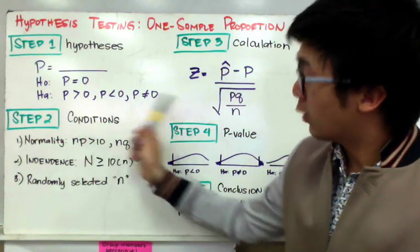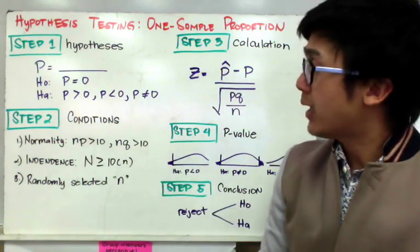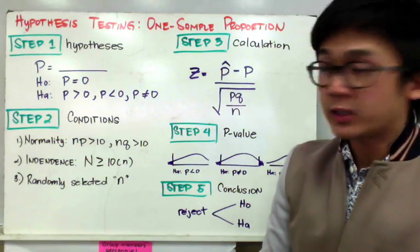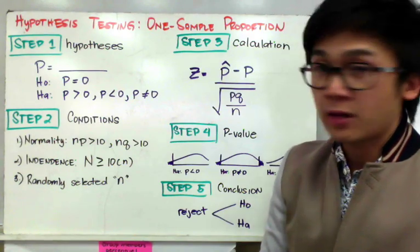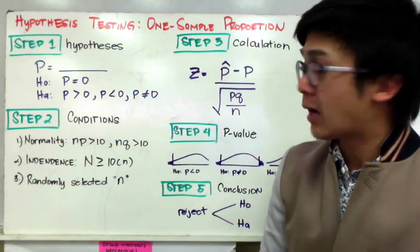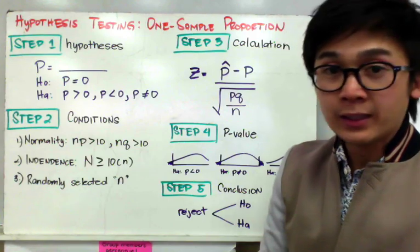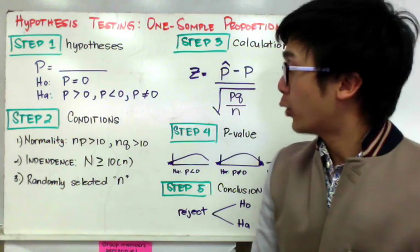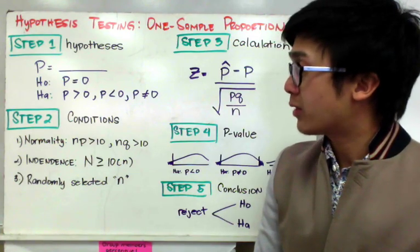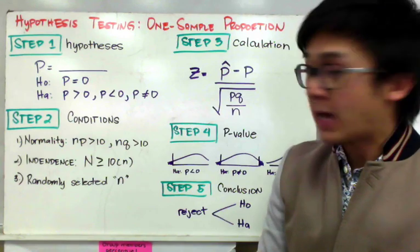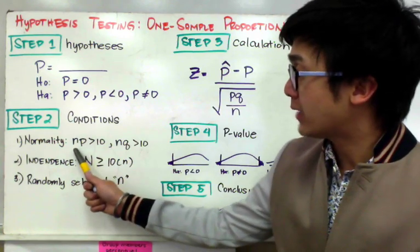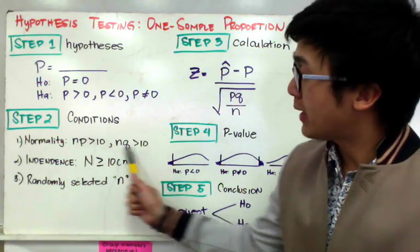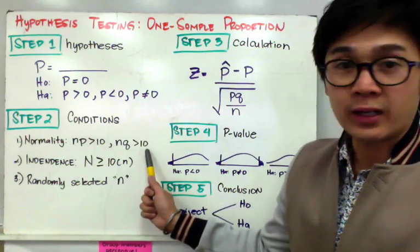These are the inequalities we use for the alternative hypothesis. For step two, we write out our conditions, which is really important in hypothesis testing so that we can rely on our results. For normality, we use rule of thumb number two: n times p greater than 10, and n times q greater than 10.